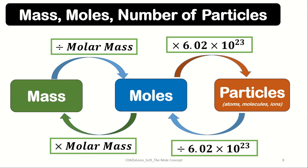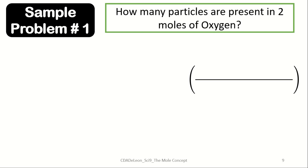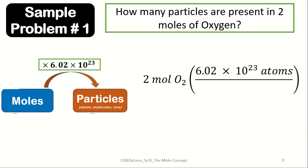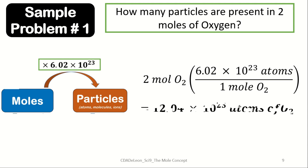Sample problem 1: How many particles are present in 2 moles of oxygen? We need to convert moles to particles by multiplying by Avogadro's number. So: 2 mol O × (6.02 × 10²³ atoms / 1 mol O). Note we use 'atoms' since oxygen is an element. The moles cancel, giving us 12.04 × 10²³ atoms of oxygen.